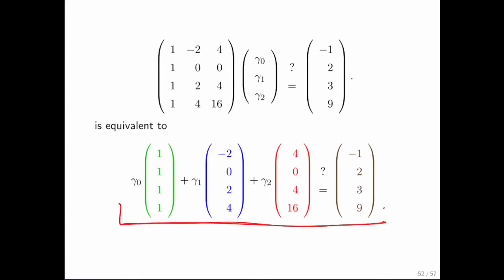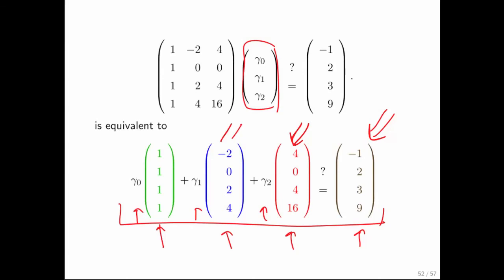The question is equivalent to asking: is there a linear combination of these vectors — representing the discretized parent functions — that gives the right-hand side? The fact is that there is no such linear combination, which is starting to give us a hint as to the question of for what right-hand sides a linear system has a solution. Clearly, there is a relation between the right-hand side and the columns of the matrix if the linear system is to have a solution.